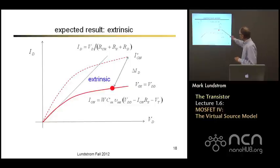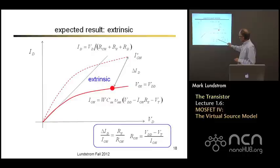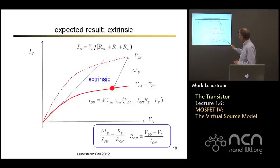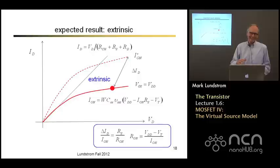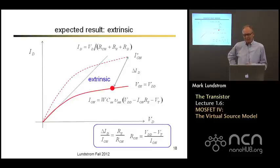You can show with a little bit of algebra that the fractional lowering of the on-current from the measured on-current is just the ratio of the series resistance to something I'll call the on-resistance. The on-resistance is just the drain voltage minus the threshold divided by the on-current. So there are simple expressions to estimate the effect of these series resistances, and if we want to calculate it properly we solve these two equations in two unknowns and determine the intrinsic voltages.